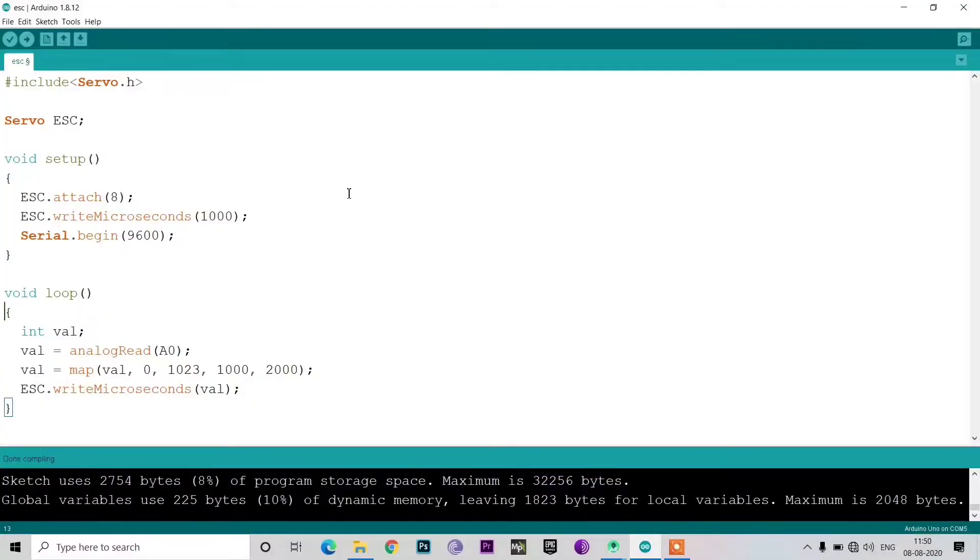Okay, so on the desktop you can see that I have written the code of the ESC control. I have included the servo library on the top because the servo and the ESC work on the same principle. They both receive PWM signals to work. And then I define the servo as ESC, all in capital.